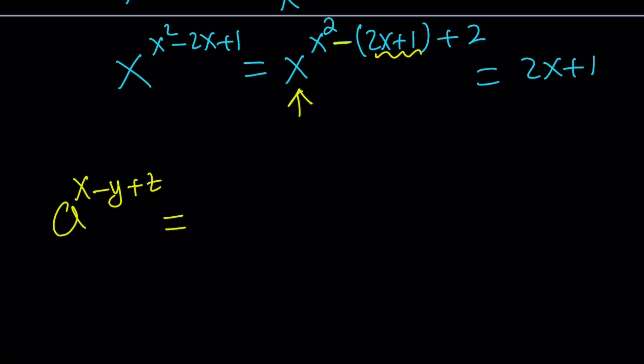If you have something like a^(x-y+z), obviously you can write this as a^x divided by a^y times a^z. It doesn't matter where you write the a^z. It's just going to be multiplied either by the fraction or the top. Same thing.